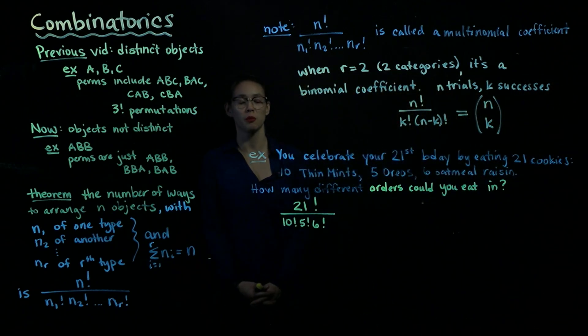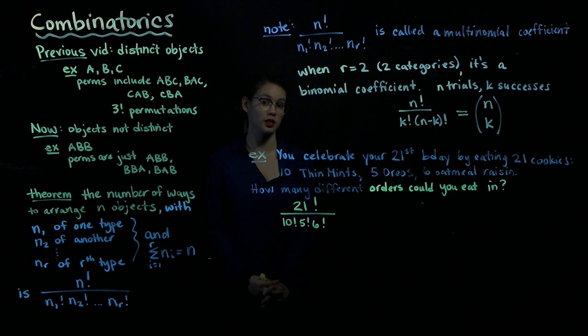In the previous video, we were talking about permuting objects that were distinguishable from each other or distinct. Now we're going to talk about objects that are not distinct from each other.